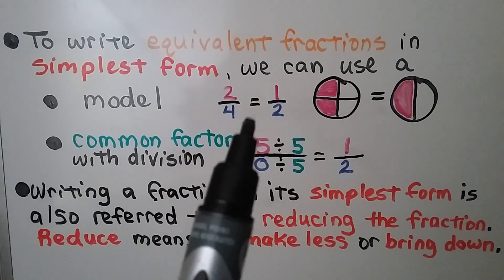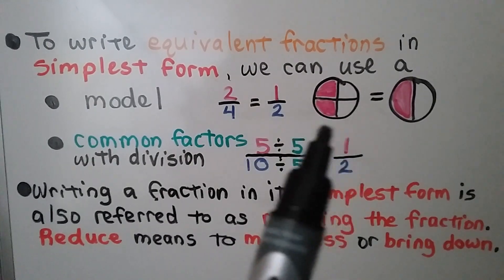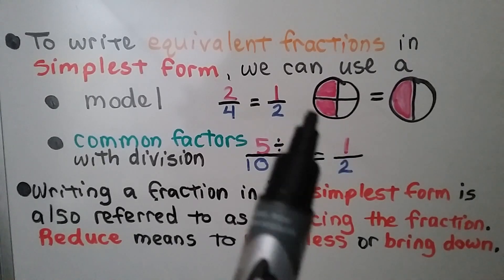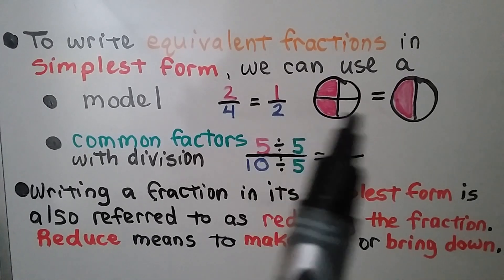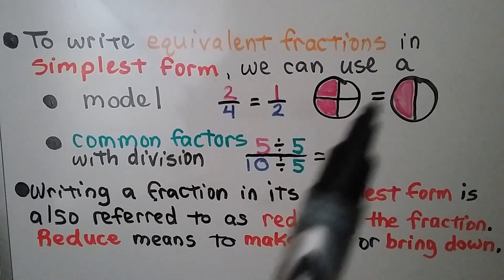Two-fourths is equal to one-half. We have a circle split into fourths. If we have two of them, it's the same thing as half the circle.